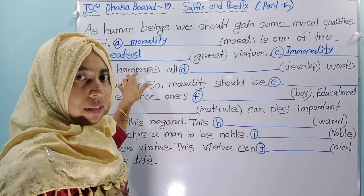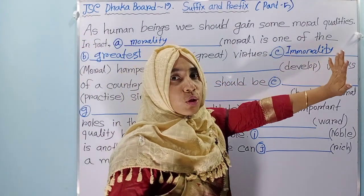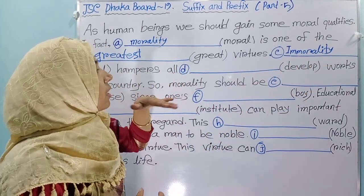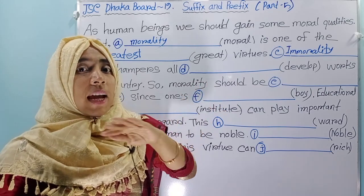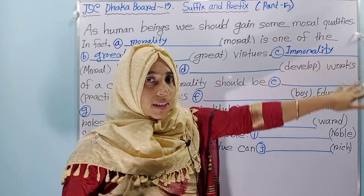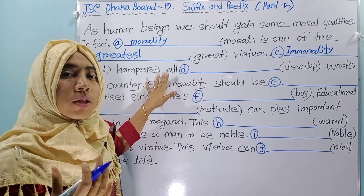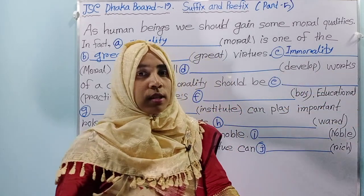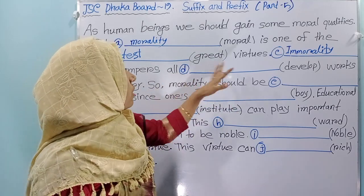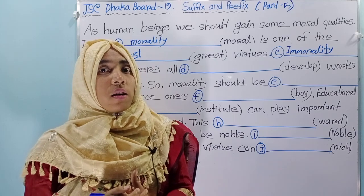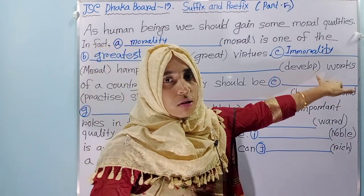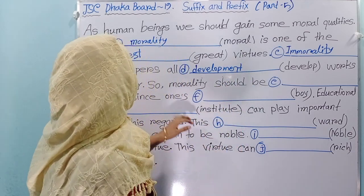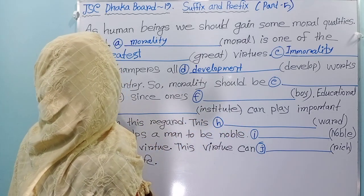Here you say 'hampers' — that means this is a verb, and before a verb you have to use a noun. But you cannot use noun 'morality' here, because we see hampering development. This is the negative side: immorality. Immorality hampers — what? While develop works. Here 'develop' is a verb. After 'while', you cannot use any verb, so you have to use a noun here. What is the noun form of develop? The noun form of develop is development. While development works of a country.